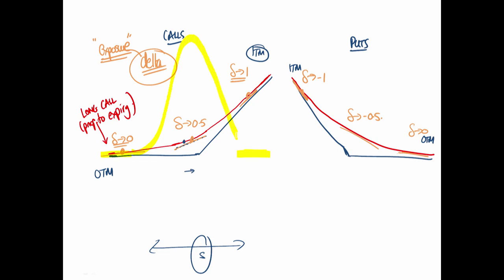Gamma is maximized when we are at the money — that's where we've got the most curvature, where the rate of change of the tangent is highest. I like to think of gamma as how fast we're changing direction — like g-force. You get the biggest g-force when going around corners, and the biggest corners are in the middle of the diagram.